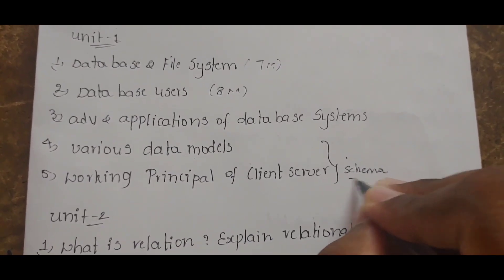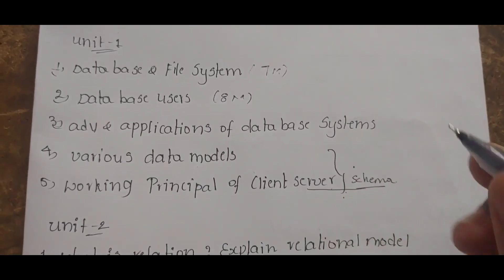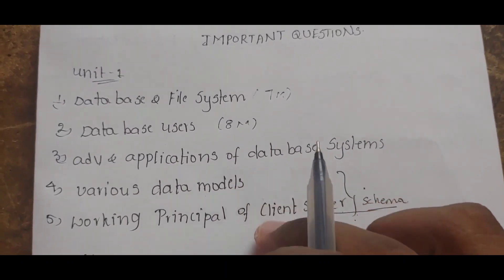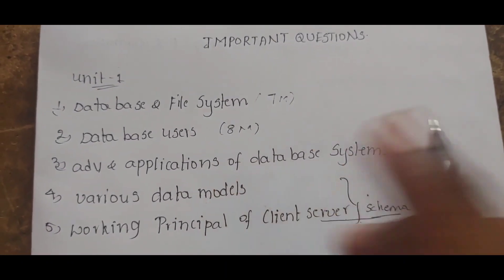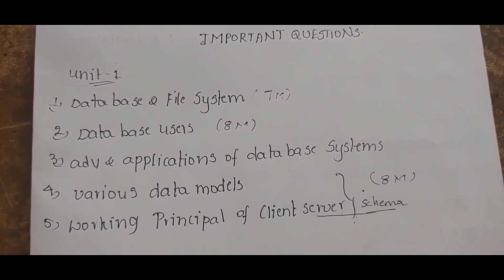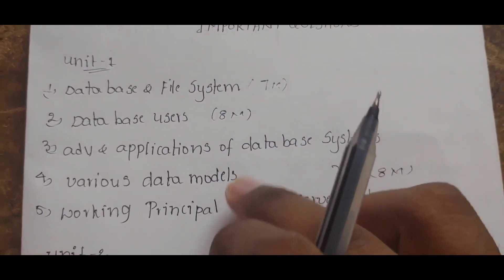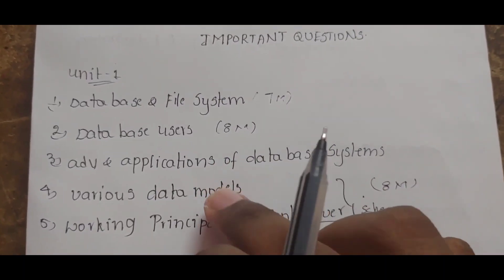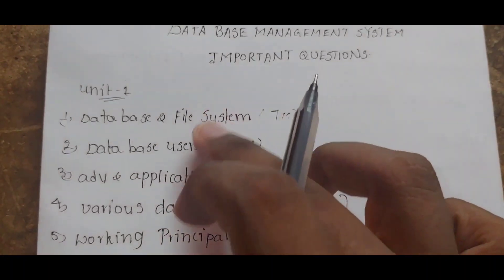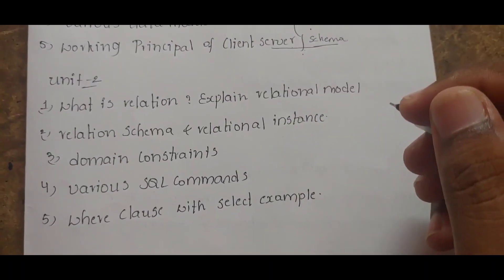Client-server schema and the DBMS topics from Unit 1 are covered for R19 and R20. If you're studying R19 or R20, the unit 1 content is already uploaded on the channel. For the next set of questions, you can get 14 marks from short and long answers combined.